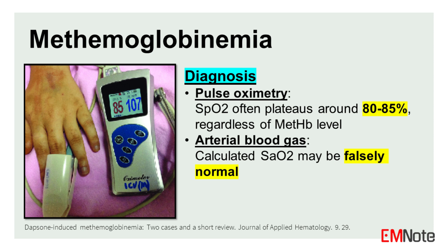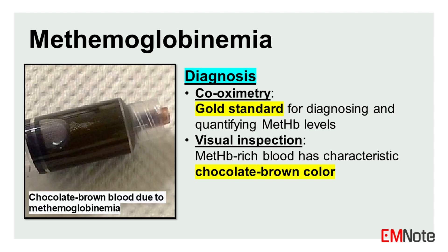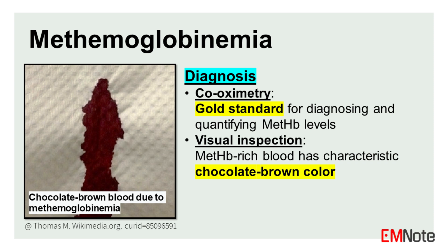Diagnosis of methemoglobinemia can be challenging due to limitations in standard diagnostic tools. (1) Pulse oximetry: standard pulse oximeters cannot accurately differentiate between oxyhemoglobin and methemoglobin; the SpO2 reading often plateaus around 80-85% regardless of the actual methemoglobin level. (2) Arterial blood gas analysis: the calculated oxygen saturation on ABG may be falsely normal, as it is based on the partial pressure of dissolved oxygen rather than the actual oxygen content. (3) Co-oximetry is the gold standard for diagnosing and quantifying methemoglobin levels, using multiple wavelengths of light to directly measure different hemoglobin species. (4) Visual inspection of blood: methemoglobin-rich blood has a characteristic chocolate brown color that does not change with exposure to oxygen.